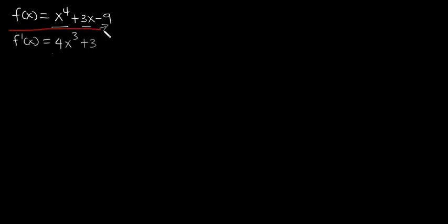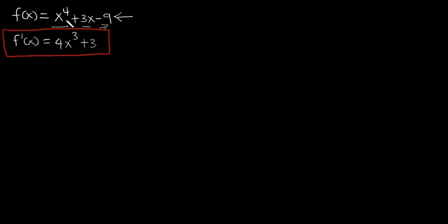After finding the derivative of the given function, this is what we get. I'm teaching you this to remind you how differentiation works. Now let's go back to the question: what function did we differentiate to actually get this function? The first term is x to the power 4. What expression did we differentiate to get this x to the power 4?